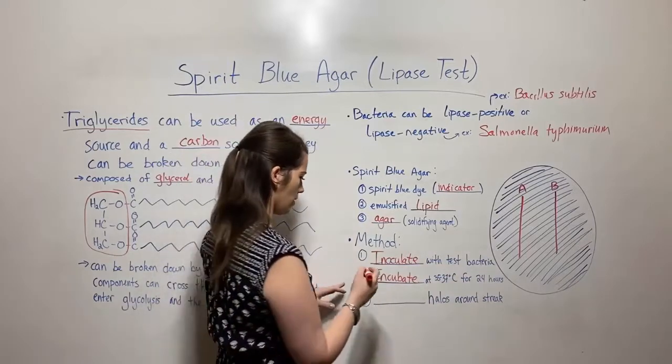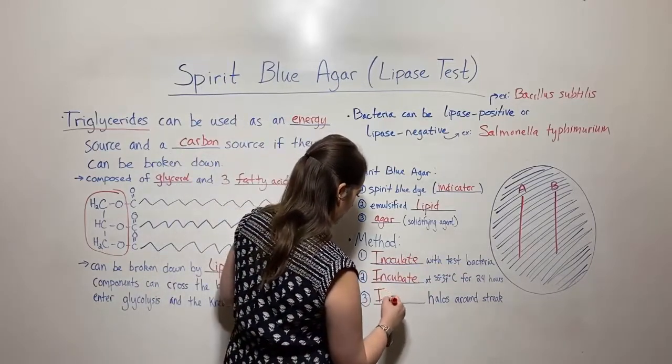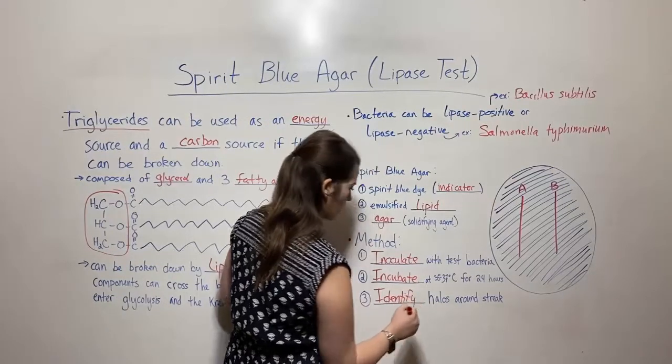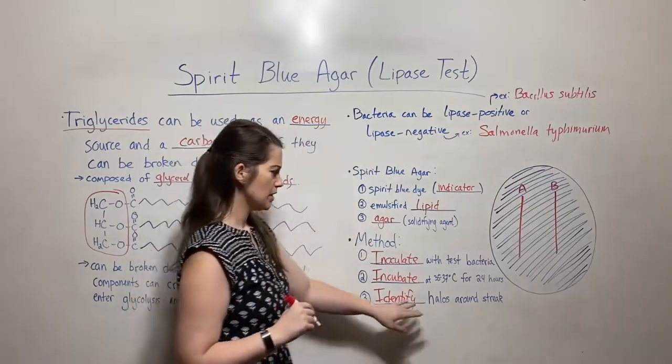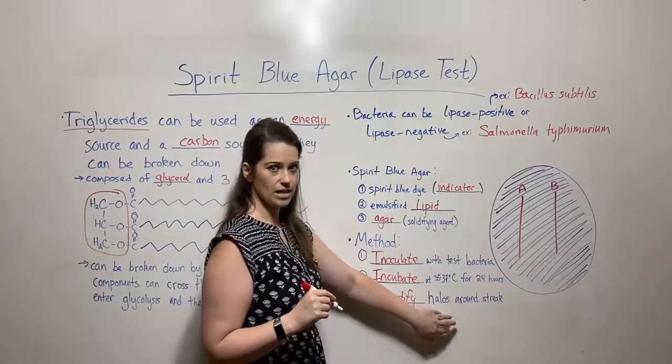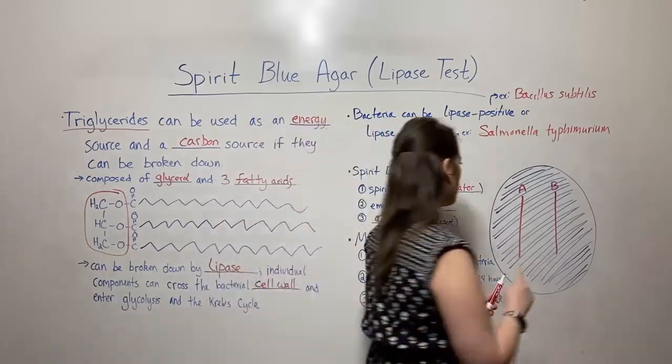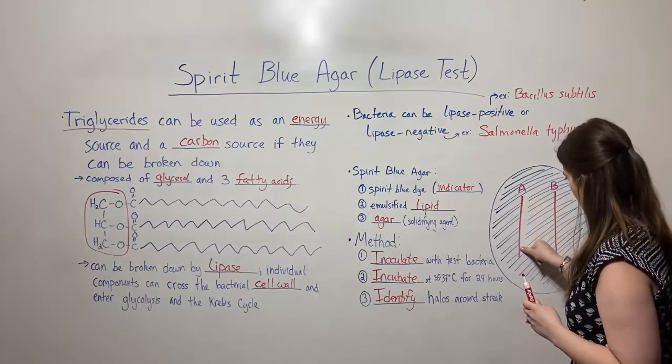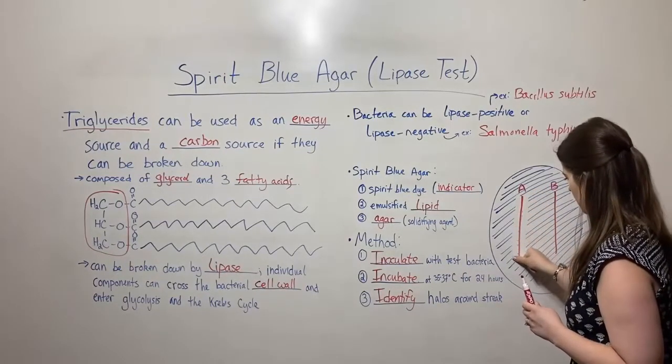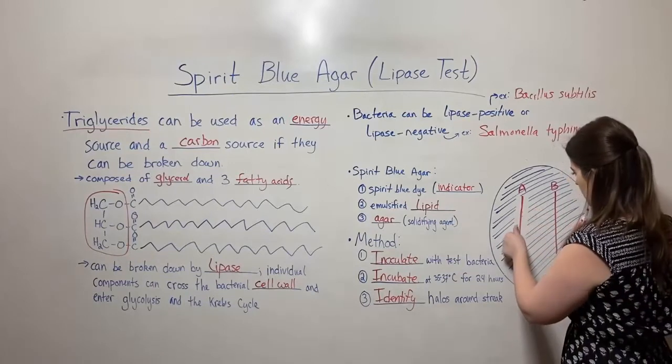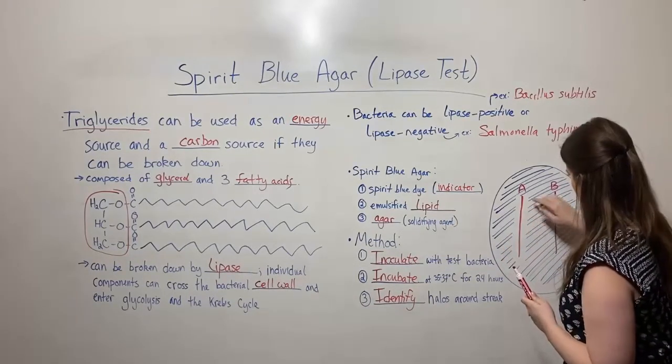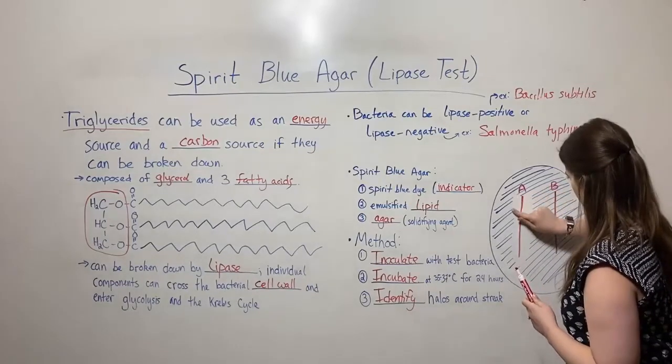Then you come back, and our third I is identify. This is where you're just going to observe the plate to see what happened. Specifically, you're looking for the presence of halos around the streak. If you come back and the first streak you did for bacterial species A maybe looks like this.